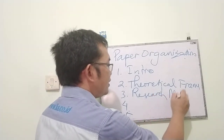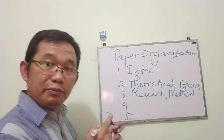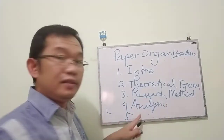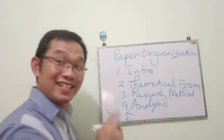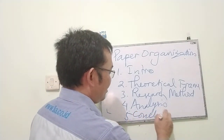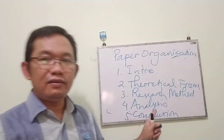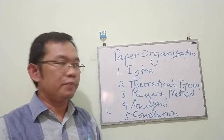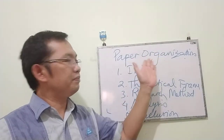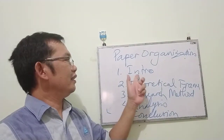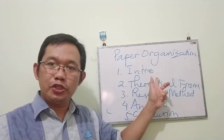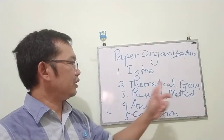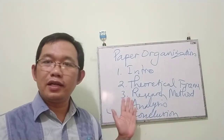We have research methodology in chapter three. Chapter four is Analysis, and the last chapter — chapter five — is Conclusion. These are the contents of your paper organization part. So in this section you explain how many chapters you will have in the research and what they are: Introduction, Theoretical Framework, Research Method, Analysis, and Conclusion.